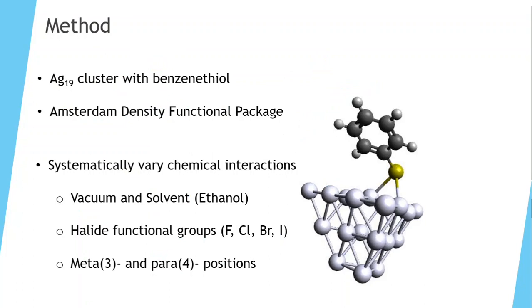In our work, we use a 19 atom silver cluster with a benzene thiol molecule. The reason why we use 19 atoms and remove this vertex atom here is because the overall structure is a closed shell system. We model this using the Amsterdam density functional program package, and our goal is to systematically vary chemical interactions through changing the variables in the system.